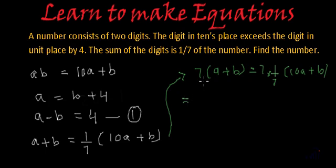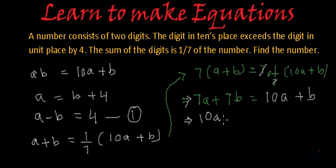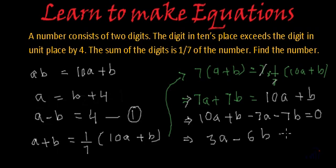And let's simplify it further. So if we open the bracket on the left hand side, we will get 7A plus 7B. This will be equal to, this 7 and this 7 will get cancelled and we will have the bracket only. So this will be equal to 10A plus B. Let's shift all these 7A and 7B to the right hand side. So we will get 10A plus B minus 7A minus 7B. This will be equal to 0. So from here we will have 10A minus 7A will be 3A.